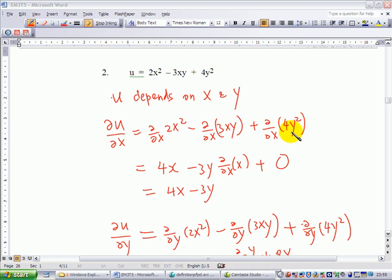Whereas on the last term, differentiate 4y squared with respect to x. As we differentiate with respect to x, you keep y constant. Therefore, 4y squared will be a constant and you differentiate a constant, you get 0. Therefore, du dx is 4x minus 3y.